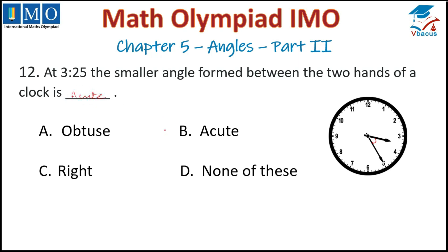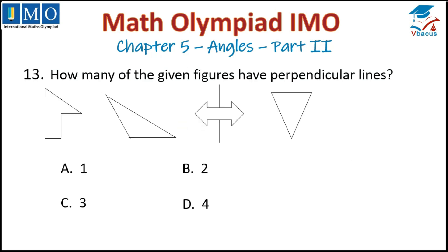Question number 13: How many of the given figures have perpendicular lines? Perpendicular lines means it makes a 90-degree angle. This figure has a perpendicular line; this figure does not. This figure has one; this one also has one; this one also; this one also; this one also. This figure does not have a perpendicular line. Counting up, two figures are there which have perpendicular lines. Option B is correct.